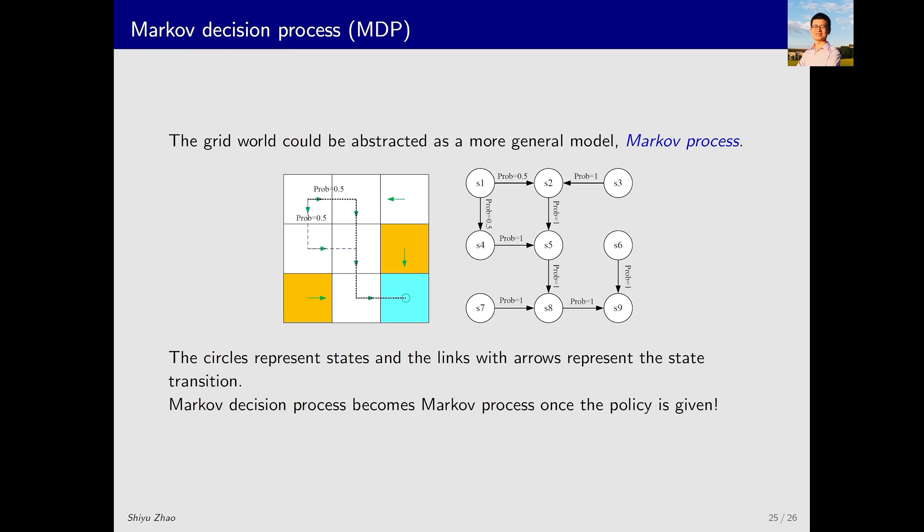Back to our grid world example. Such an example can be depicted with a diagram like this. Here, each circle represents a state. And the edges represent the transitions between states upon taking certain actions. For example, there's a 0.5 probability of moving right to here. And that means there's a 0.5 probability of moving from S1 to S2. This diagram illustrates a Markov process. But what we've been discussing is a Markov decision process. How are they related? Once the policy is given, and the policy integrates with the entire system, a Markov decision process becomes a Markov process.